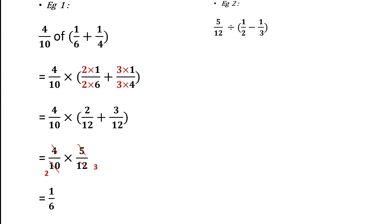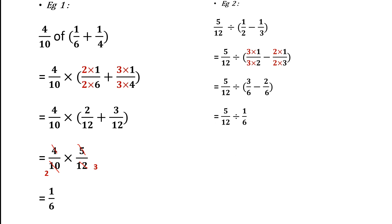Moving on to another example: five over twelve divided by an expression within brackets. The brackets must be solved first. The fractions inside have denominators two and three, so I equate the denominators by multiplying accordingly to get a denominator of six. Then I subtract: three minus two is one, giving one over six. For division, I convert it to multiplication by taking the reciprocal of the second fraction. Then twelve and six can be cancelled — there are two sixes in twelve — giving the answer five over two. Since this is an improper fraction, we convert it to the mixed number two and a half.